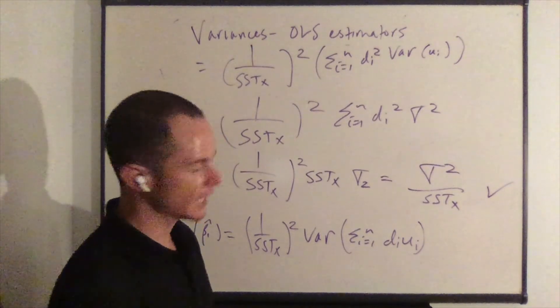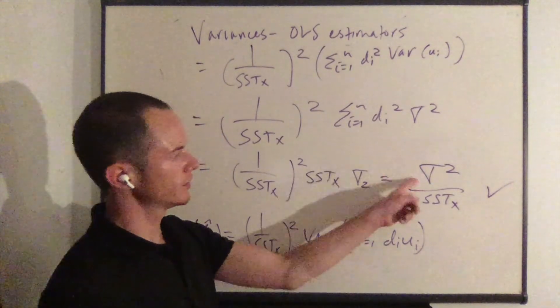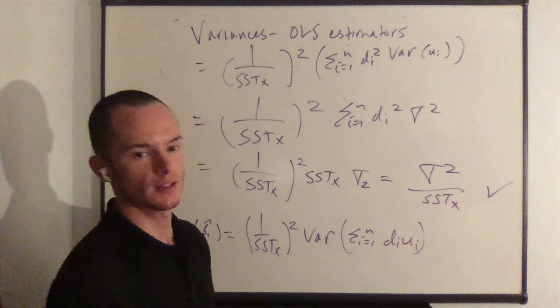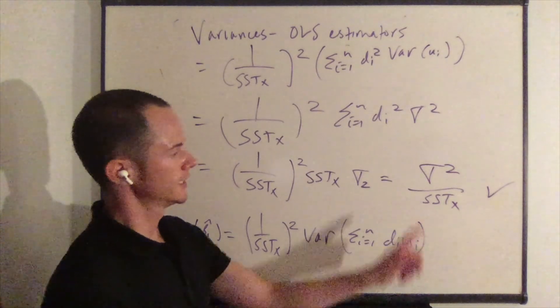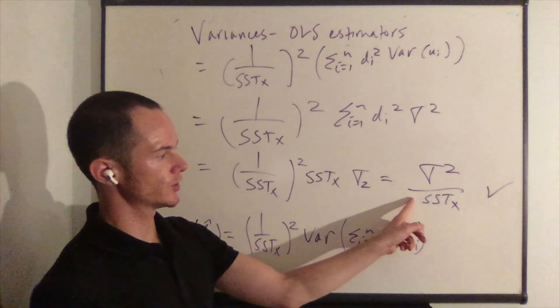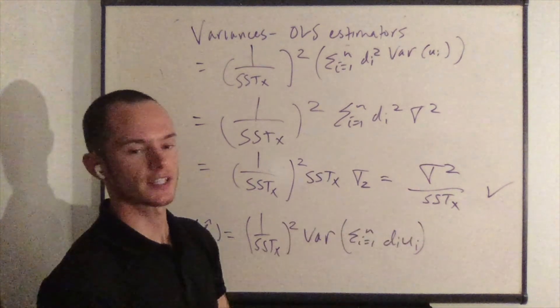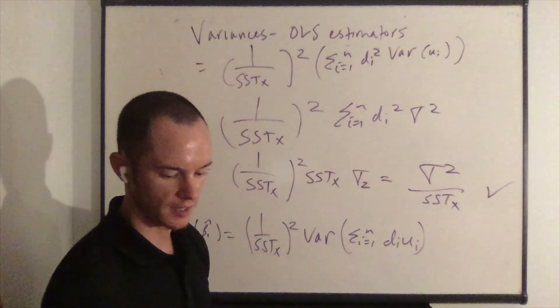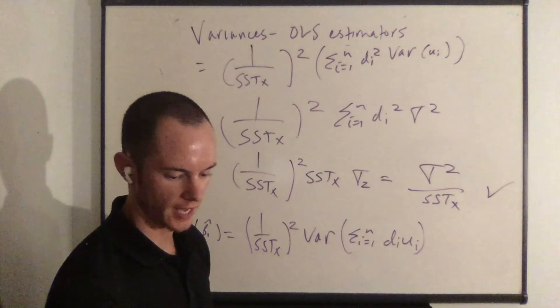Again: the larger the error variance, the larger the variance of β̂₁; and the larger the variance of X, the smaller the variance of β̂₁.